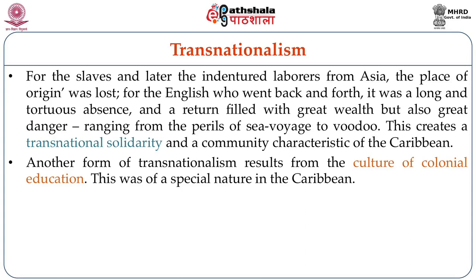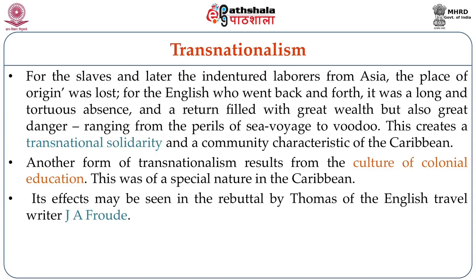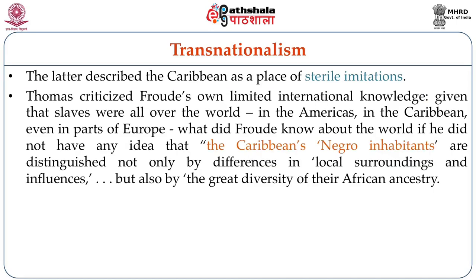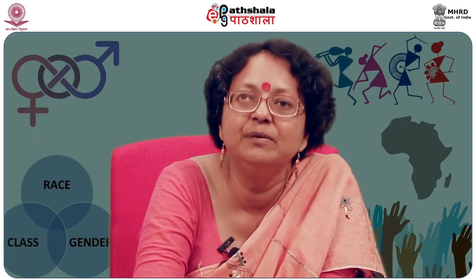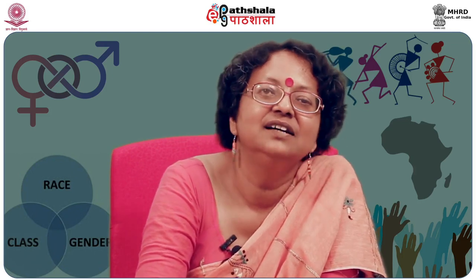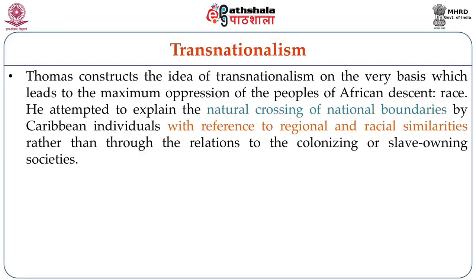Its effects may be seen in the rebuttal by Thomas of the English travel writer J. A. Froude. Froude described the Caribbean as a place of sterile imitations. Thomas criticized Froude's own limited international knowledge, pointing out that Froude thought of all Africans as similar to each other whereas they all came from different parts of Africa and had their own cultures and languages — so in calling them imitators, Froude was actually obfuscating the basis of their identities. Thomas constructs the idea of transnationalism on the very basis which leads to the maximum oppression of people of African descent, that is race.